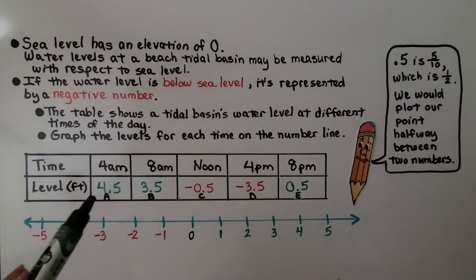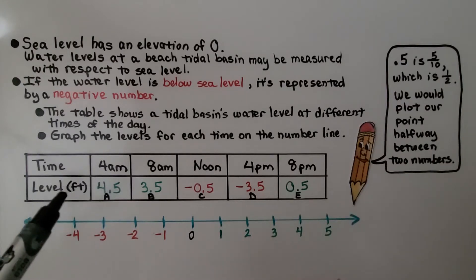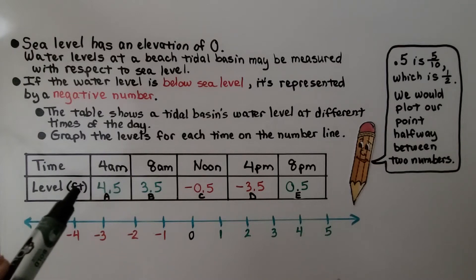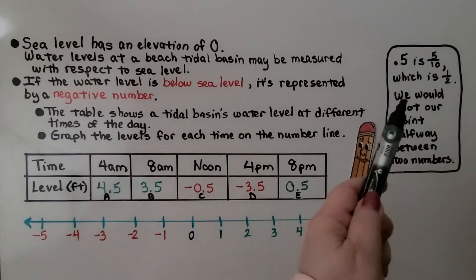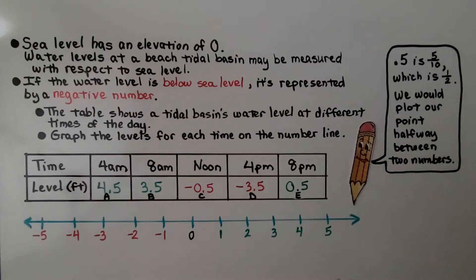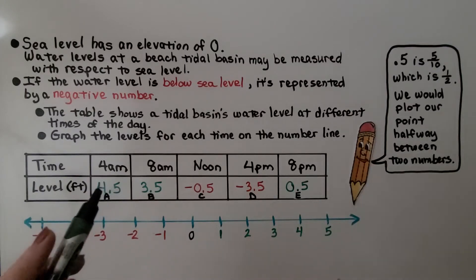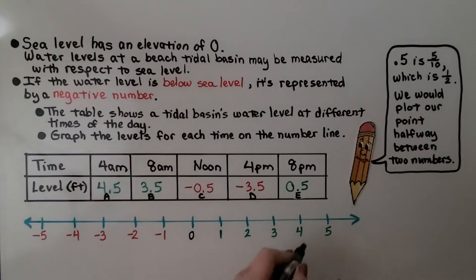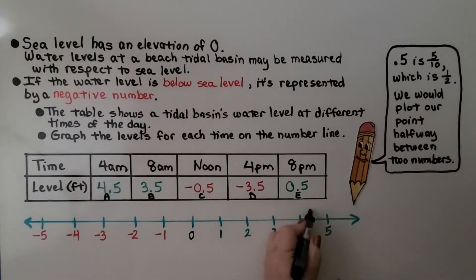At 4 a.m., it's at 4.5 feet. Now, 0.5 is 5 tenths, which is half, and we would plot our point halfway between two numbers. So positive 4.5 is greater than 4 — 4.5 would be here, and that would be A.